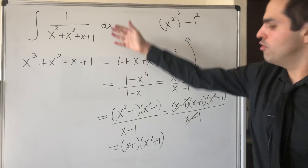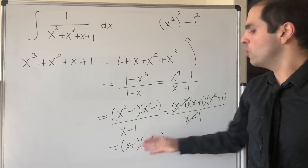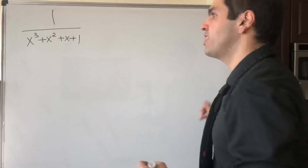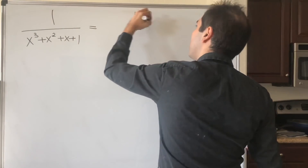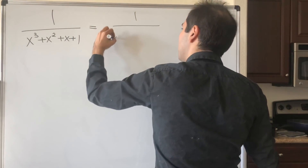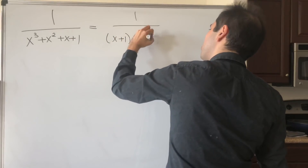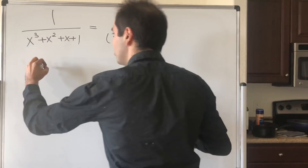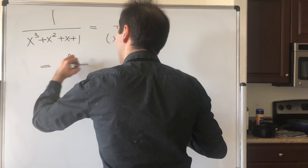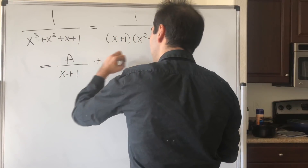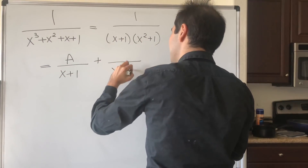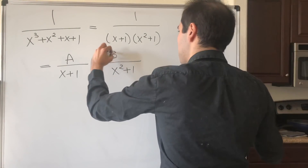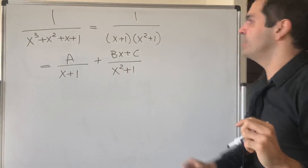So in particular for the fraction, we want to write this as 1 over x plus 1 times x squared plus 1. So 1 over x cubed plus x squared plus x plus 1 becomes 1 over x plus 1 times x squared plus 1. To partially fractionate that, we write this as A over x plus 1, and then — not B over x squared plus 1, but Bx plus C, because this has degree 2.